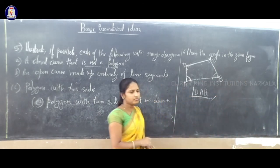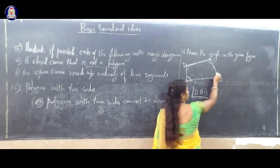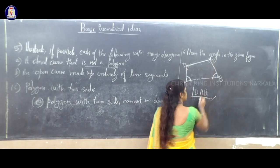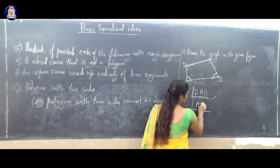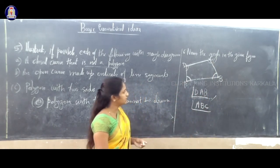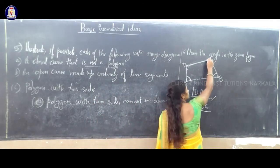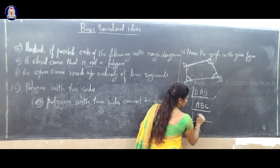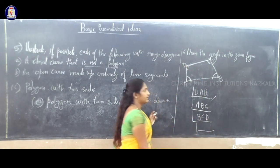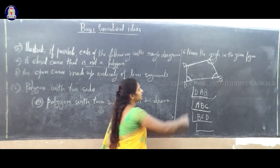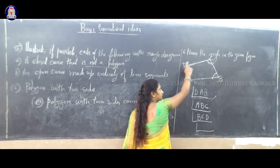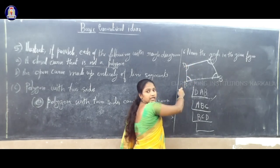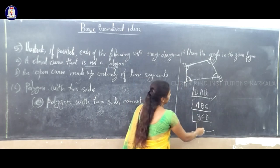Another angle — angle B. We can write A, B, C — so angle ABC means angle B. One other angle is angle C, written as B, C, D — angle BCD. And one more angle is angle D, written as C, D, A or A, D, C — angle CDA means angle D.